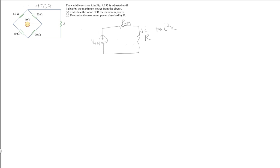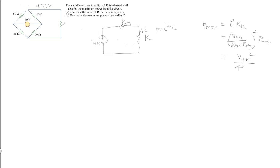The power P is given by that expression. P max takes a maximum value when R becomes equal to R Thevenin. So that's I squared R Thevenin, and the current itself is going to be V Thevenin divided by R Thevenin plus R Thevenin. Because they're both R Thevenin, that simplifies to V Thevenin squared divided by 4 R Thevenin, as we saw in class.